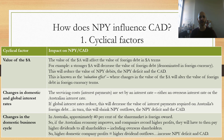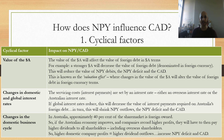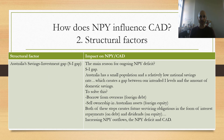The final cyclical factor is changes in the domestic business cycle. In Australia, about 40% of the share market is foreign owned. So if the domestic economy does well and companies record higher profits, then more money in terms of dividends will flow out of Australia to the foreign owners of those companies. So higher domestic company profits equals higher dividend outflows, which will then increase the NPY deficit and increase the current account deficit.